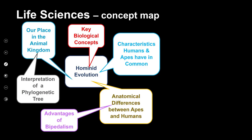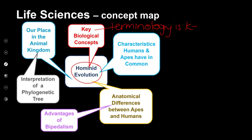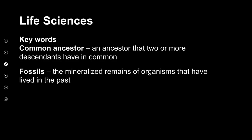So the concepts — let's have a look at the topic. We're going to basically be talking about hominid evolution, and we're going to look at key biological concepts. Remember, terminology is key, always, because if we understand the terminology, then we can understand what the questions are asking us, we understand the concepts. We're going to have a look at our place in the animal kingdom, how we interpret a phylogenetic tree, characteristics that humans and apes have in common, the differences that they have, and the advantages of bipedalism. So there's quite a bit of information here.